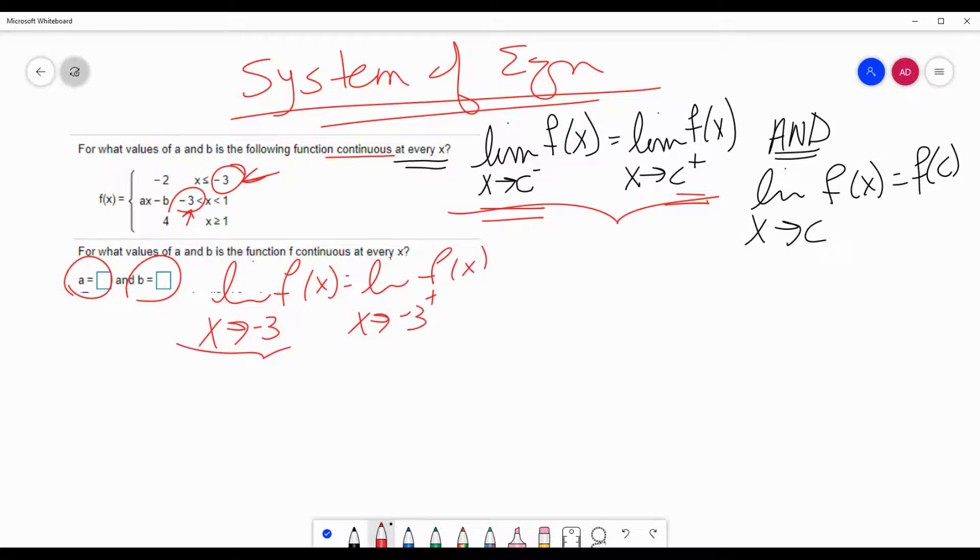So you say, okay, well if I'm going to negative 3 from the left-hand side, I get negative 2, because that's what that number is. If I'm going to negative 3 from the right-hand side, I'm going to plug negative 3 in for x, and I'm going to get negative 3a minus b. That's one equation. But like I said, a system of equations usually requires two or more.